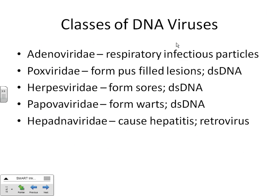There are five groups or classes of DNA viruses. You need to know their names, because eventually we will get to talk about specific diseases, and we're going to classify the virus by their group names. The first major class of DNA viruses is called adenoviridae.